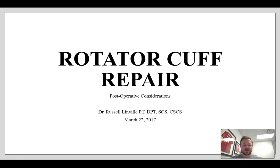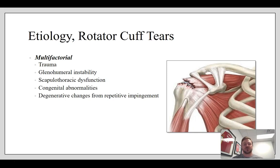Let's talk about the big one — the rotator cuff repair. Everyone knows someone with a rotator cuff repair. The etiology of rotator cuff tears is multifactorial: rotator cuff tears can happen through trauma, glenohumeral instability, scapulothoracic dysfunction meaning impingement, congenital abnormalities, degenerative changes from repetitive impingement, and chronic overuse. There's a common misleading image online — if you type 'rotator cuff tear' into Google and click images, you'll see a huge massive flap tear that looks ripped off the bone. A lot of these patients actually do really well non-operatively.